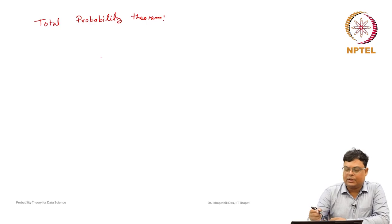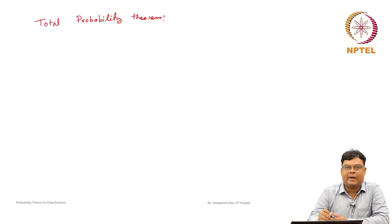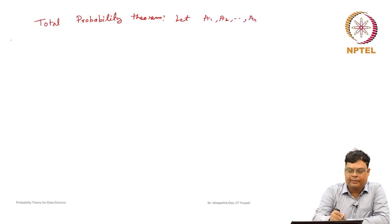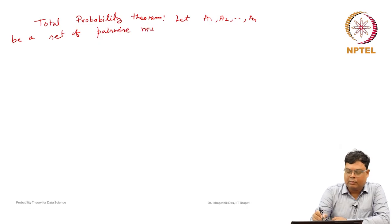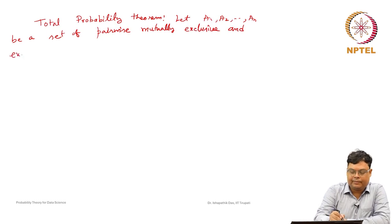So what does the total probability theorem say? We have already discussed this kind of theory before, but let us repeat it again. Let A1, A2, ..., AN be a set of pairwise mutually exclusive and exhaustive events.